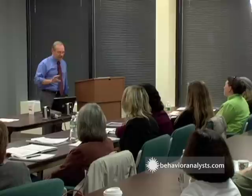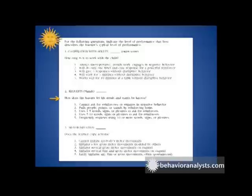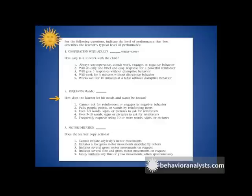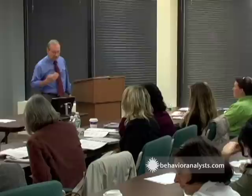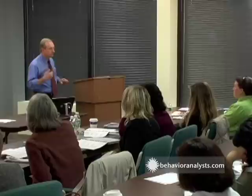The second skill area is requesting or manding: how does the child let his needs and wants be known? Level one: cannot ask for reinforcers or engages in negative behavior. Level two: pulls people, points, or stands by reinforcing items — what we call communicative intent in speech-language pathology. Level three: uses one to five words, signs, or pictures to ask for reinforcers. Level four: uses five to ten words, signs, or pictures. Level five: frequently requests using ten or more words, signs, or pictures — a variety of ways of asking for different things.